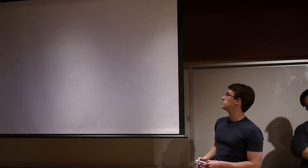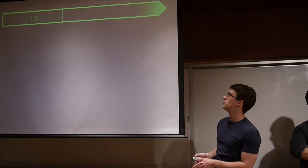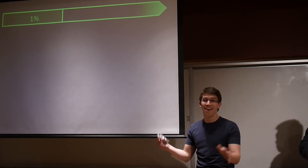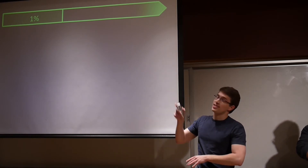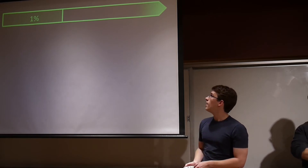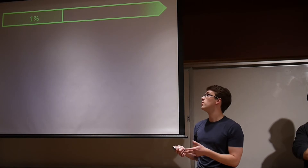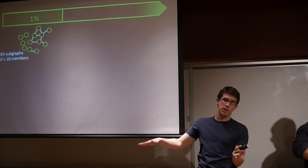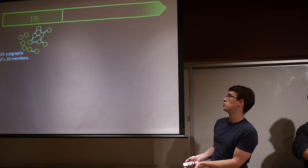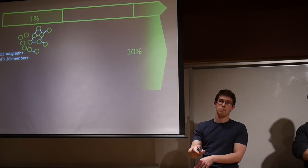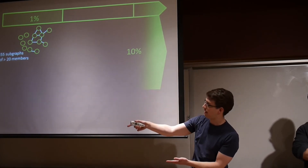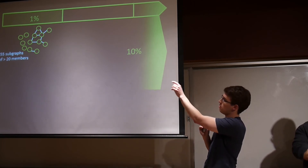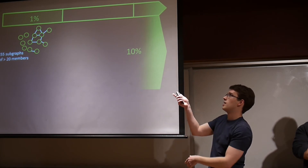Looking at our timeline from the beginning of the course to the end: we've been collecting one percent of the Twitter data stream since the beginning of class. From this, we've already started looking at graph information and communities, finding about 450 subgraphs of Twitter with more than 20 members — though it's an extremely long-tail distribution. We expect this will develop over time. We also have the same garden hose stream that the other class has, which has also been collecting. We're doing all of our model development on the one percent, then testing on the final ten percent.